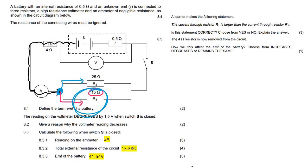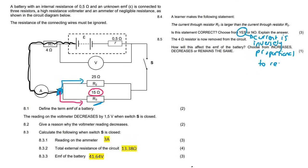The current in the 15 ohm branch will be more. The learner's statement is correct. We say: yes, because current is inversely proportional to resistance. When resistance is large, current is small; when resistance is small, current is large. So the student is correct.